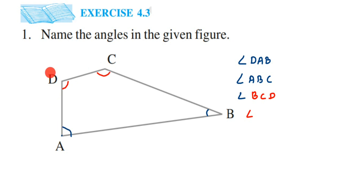The next angle is at vertex D. You can write it as CDA or ADC, where D is at the center. So this will be angle CDA. There are four vertices, which means four angles, and we've found all four. This is a simple question — I hope it is clear. If you have any other questions or doubts, you can drop a comment. Thank you so much for watching.